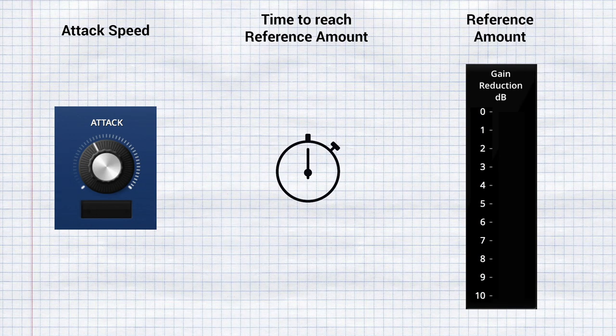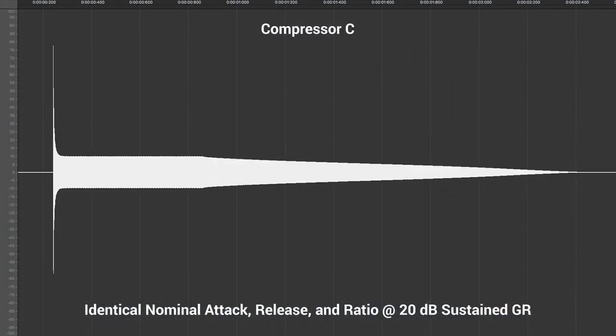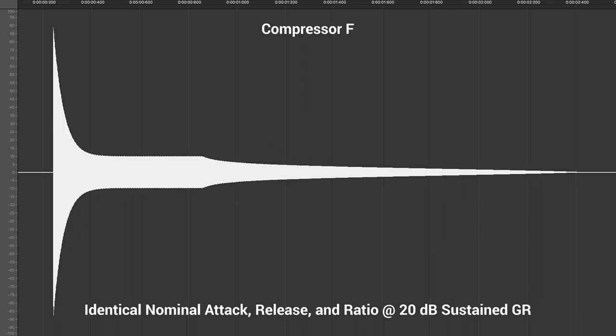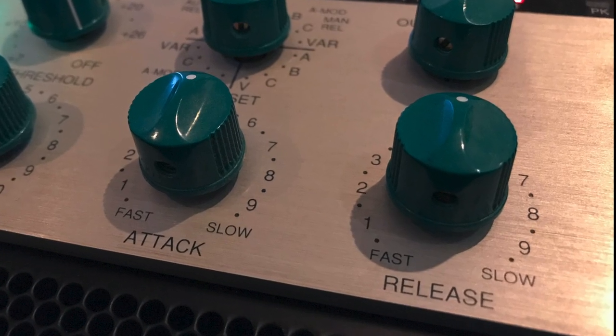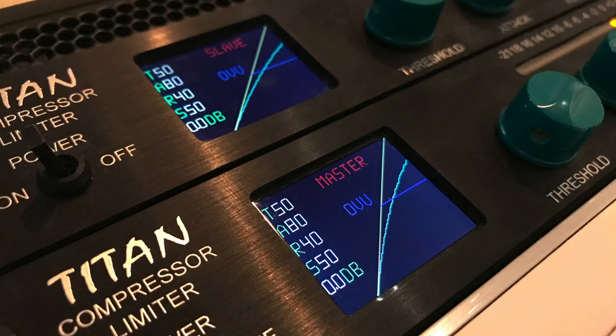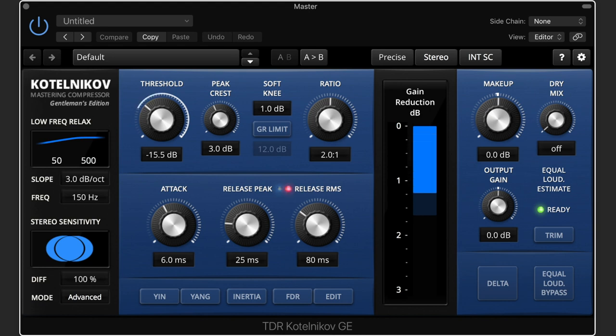It's a popular misconception that the attack and release values specify time periods. In reality they control the speed. Milliseconds are used at the design stage to measure how quickly gain changes while aiming for, say, 10 dB or 80% of a desired gain reduction. But since no industry standard exists for this amount, seemingly identical speeds can vary greatly between compressors. For this reason many compressors use nondescript values from 1 to 10, 1 to 20, or perhaps 1 to 100. If a compressor uses milliseconds it's still just a reference to the speed, not a time period.